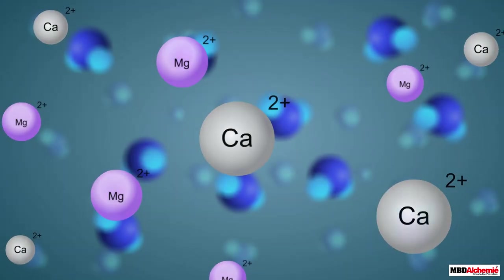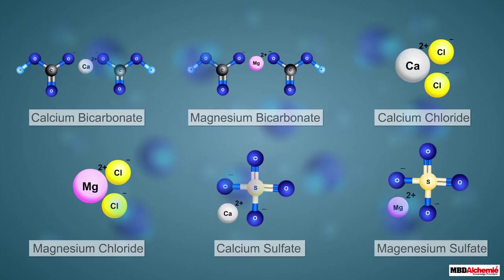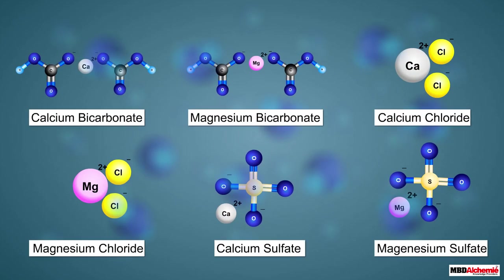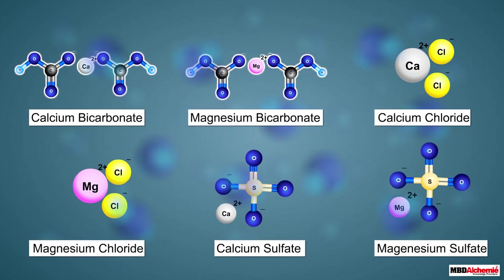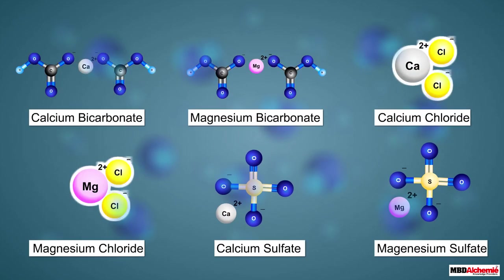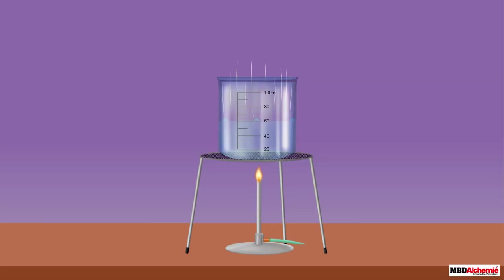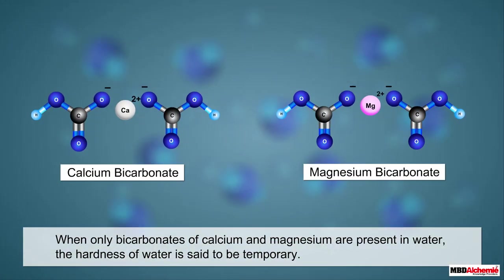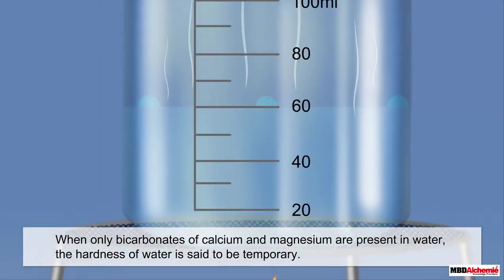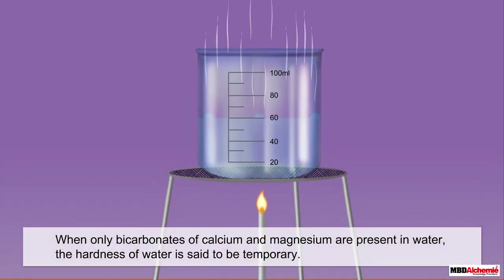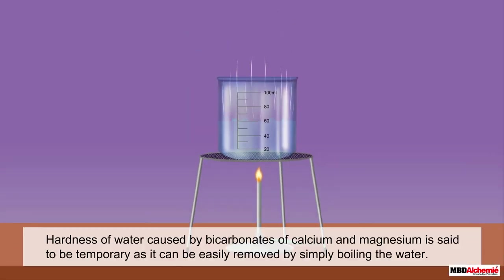The insoluble calcium and magnesium salts remain on the surface of water as precipitates, commonly called scum, resulting in little lather. Calcium and magnesium ions in hard water are present as soluble salts — bicarbonates, chlorides, or sulfates. When only bicarbonates of calcium and magnesium are present, the hardness is said to be temporary.